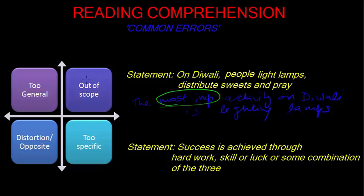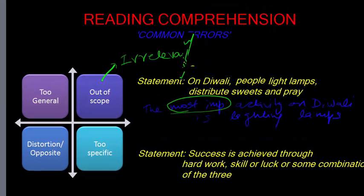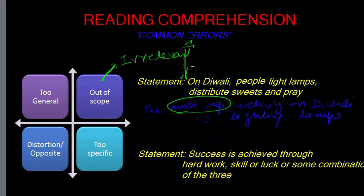So along with out of scope, another thing that you need to be careful is that an answer choice that is irrelevant. In this case, let us say the answer statement given is, by lighting lamps, people try to please Goddess Lakshmi. This is irrelevant in the context of the passage because it is nowhere mentioned whether this is done to please Goddess Lakshmi or not. And nothing about Goddess Lakshmi is mentioned, so it is irrelevant to the passage.